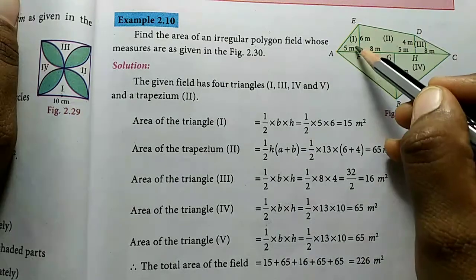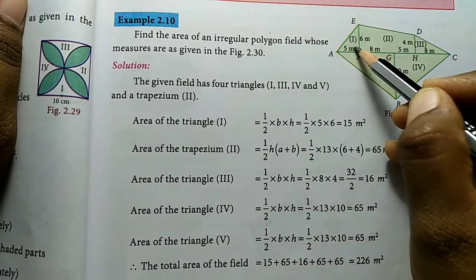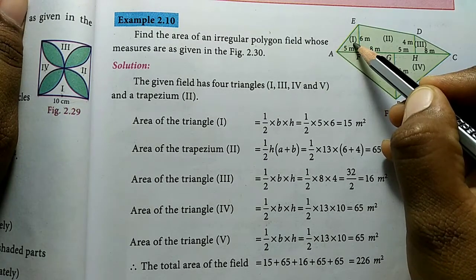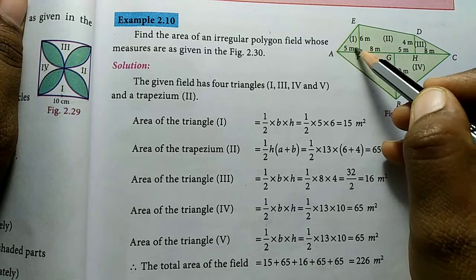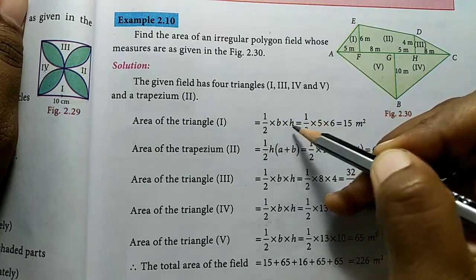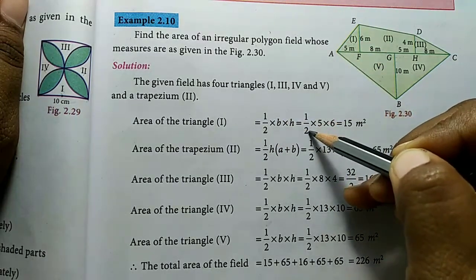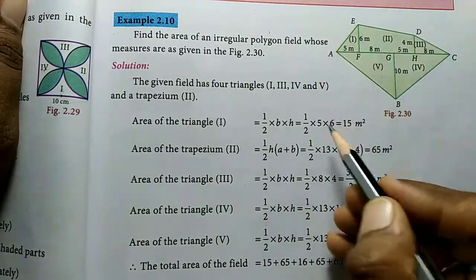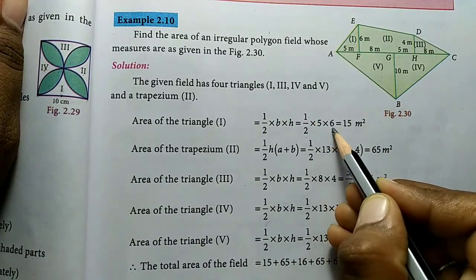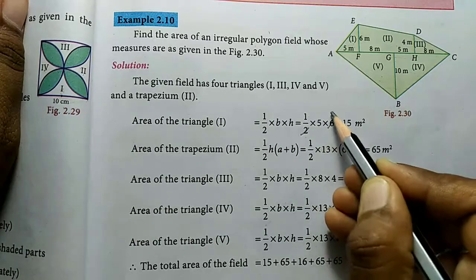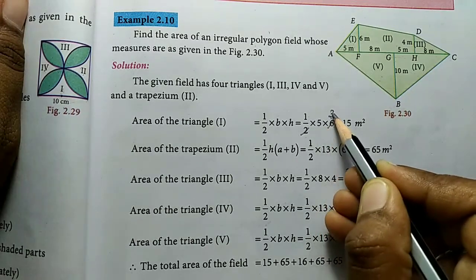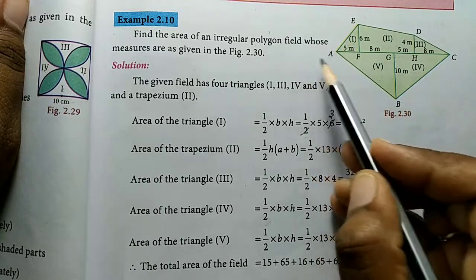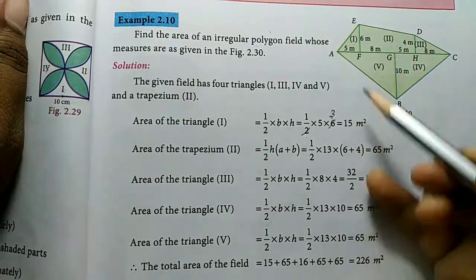Shape 1 is a triangle. Shape 2 is also a triangle shape. Area of triangle = 1/2 × base × height. So 1/2 × base 5 cm × height 6 cm = 1/2 × 5 × 6 = 15 square meters. So the area of the first triangle is 15 square meters.